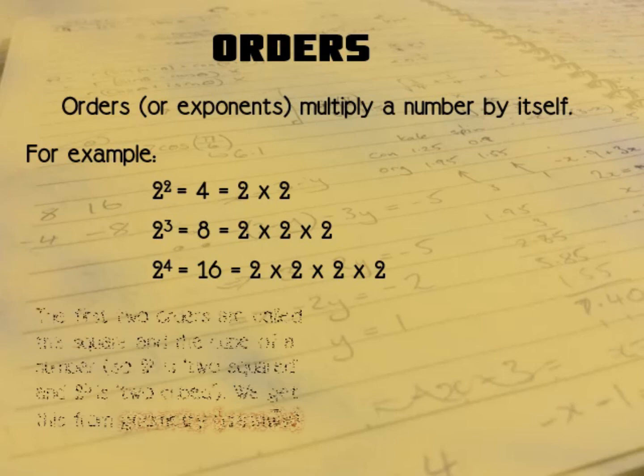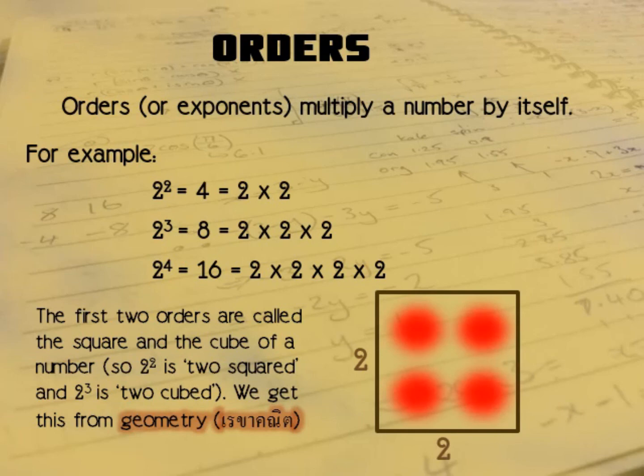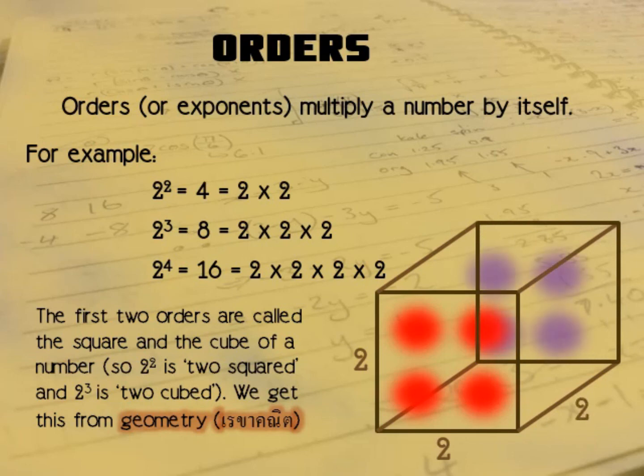So just quickly let's talk about the first two powers: the second power and the third power, which are called the square and the cube of a number. 2 to the power of 2 is also called 2 squared, and 2 to the power of 3 is also called 2 cubed. We get this from geometry. We have a line there that is 2. If we extend that line into a square, then we have 2 times 2, and that means we have four little 1 by 1 squares inside the big square. And we can extend that again so we have a cube, a 3D square, which is 2 by 2 by 2, which gives us 8—one, two, three, four, five, six, seven, eight little 1 by 1 by 1 cubes to make up that space.